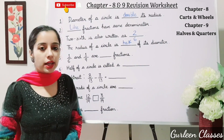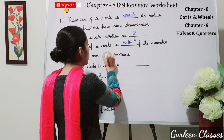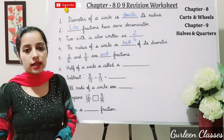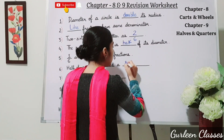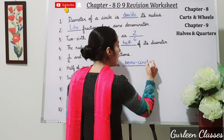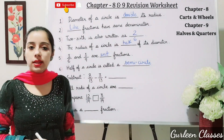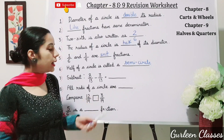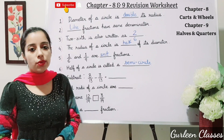Number five: one upon six and one upon nine are dash fractions. Fractions with numerator one are called unit fractions — write here 'unit fractions'. Number six: half of a circle is called a semicircle — write here 'semicircle'. Next, subtract: 8 upon 13 minus 3 upon 13. Here the denominator 13 is the same, so we subtract the numerators: 8 minus 3 equals 5. The answer is 5 upon 13.